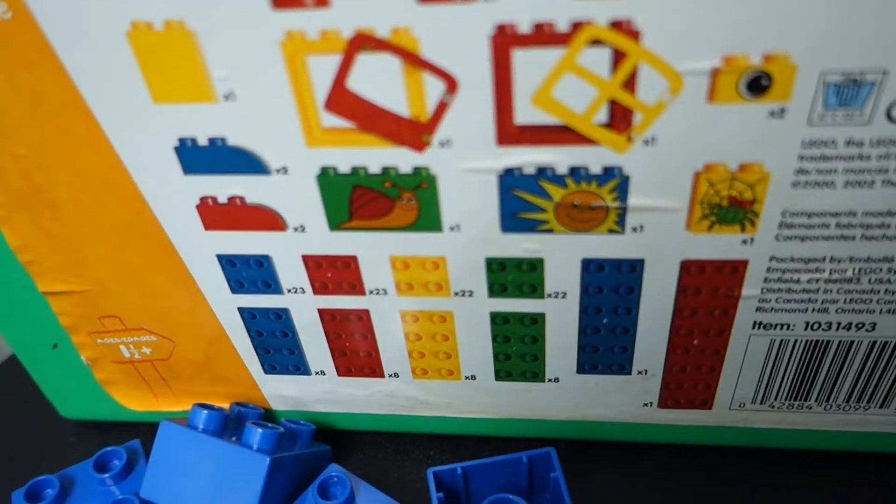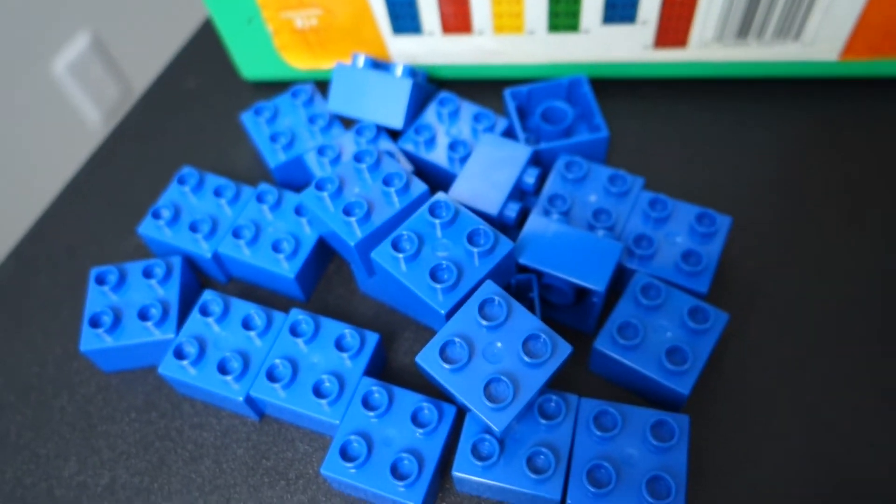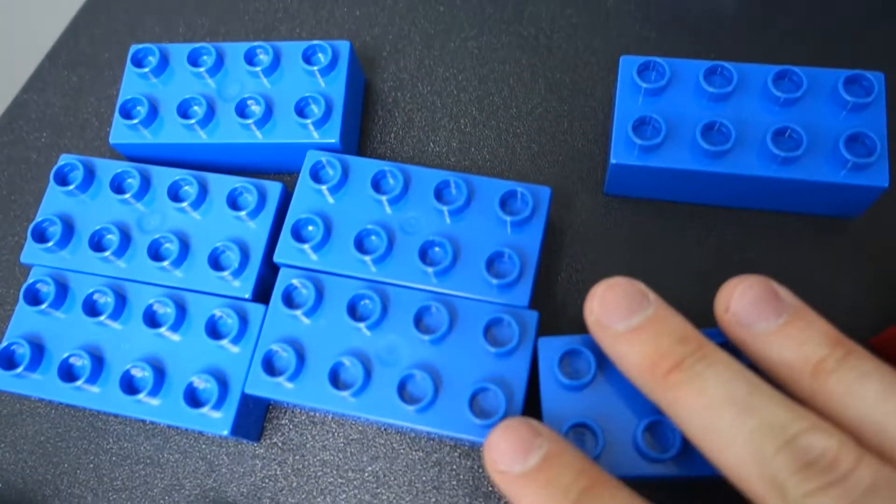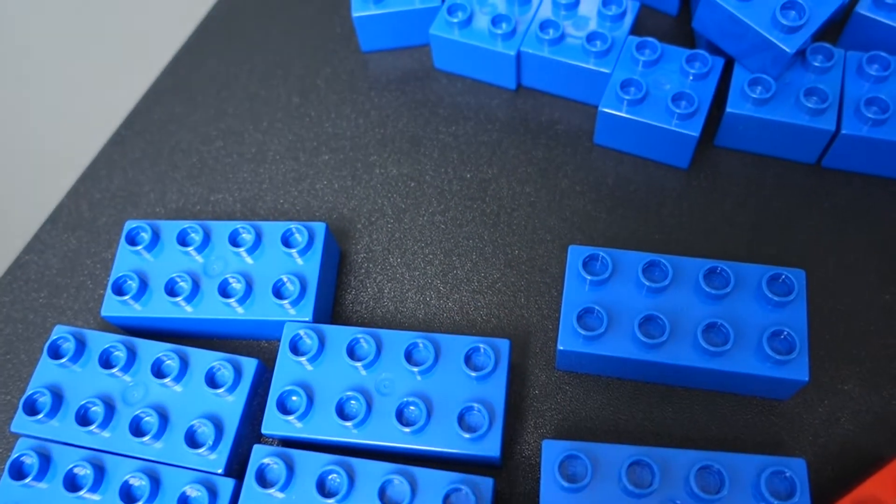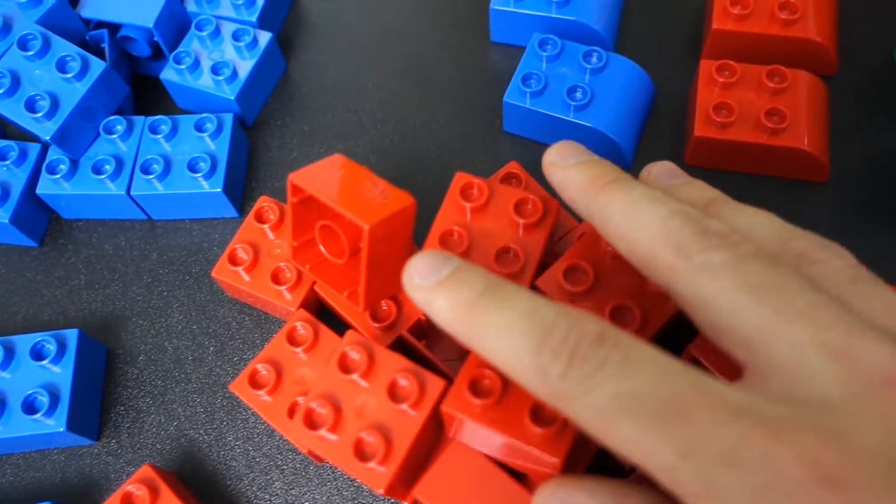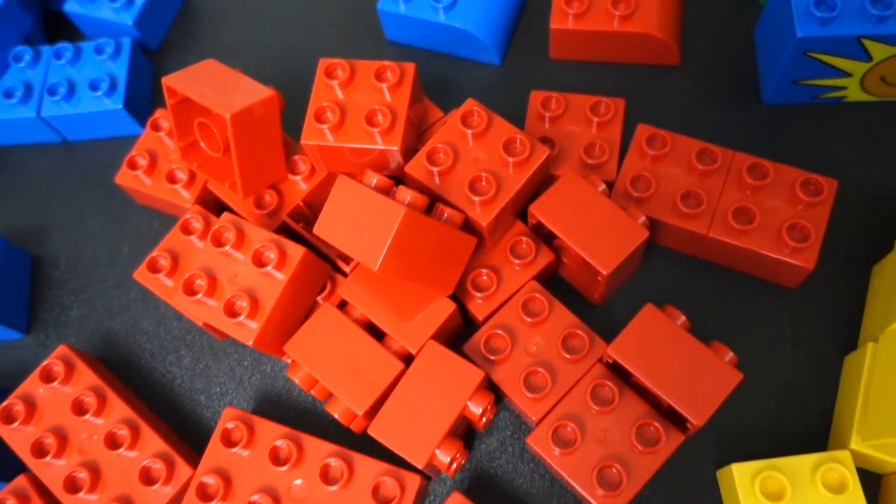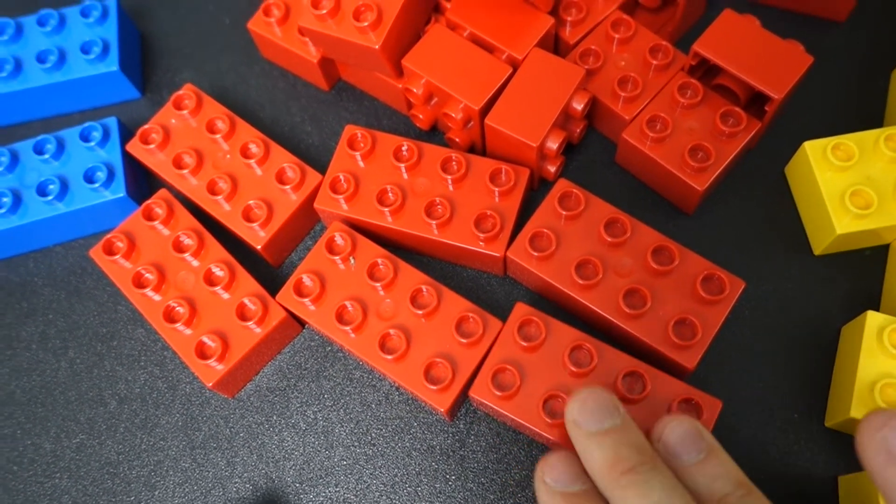I'm supposed to have 23 of these which I have 23, and I'm supposed to have eight of these which I have seven. So I'm missing one of these. And that kind of repeats across here. I have 23 of these, they're all included, and I'm supposed to have eight of these. I have six, so I'm missing two.